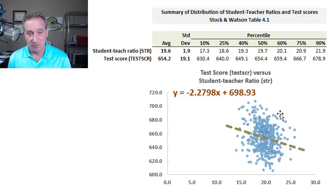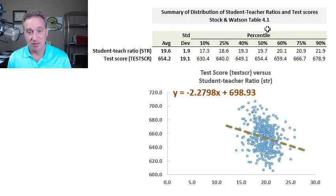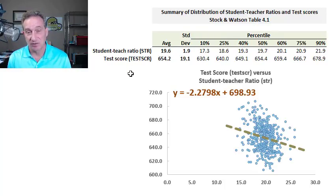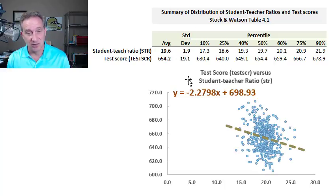Here we have the population regression function. If we retrieved the data for the first time, the first step would probably be exploratory data analysis. We might generate something like Stock and Watson Table 4.1 — a typical EDA — where we have one row for each variable: student-teacher ratio and test score. We have average, standard deviation as our measure of dispersion, and percentiles.